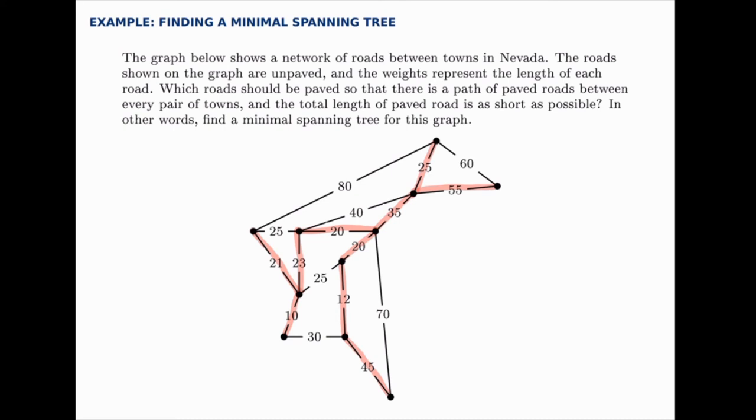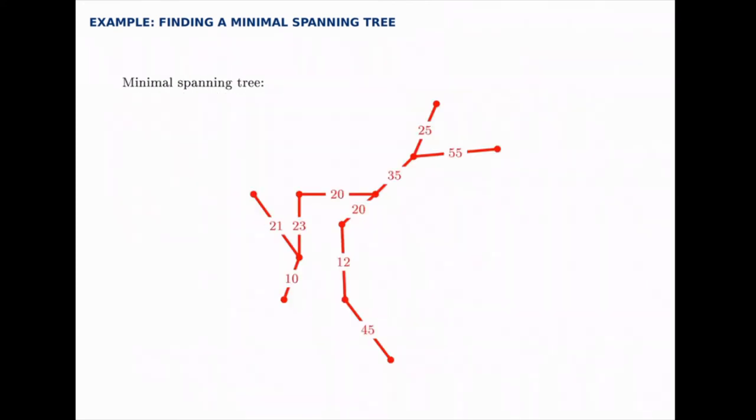If you notice they're all connected and any other edges we added would start to create loops. So we have the minimal spanning tree and we could draw it a little bit more carefully here. That's the minimal spanning tree for the graph that's given.